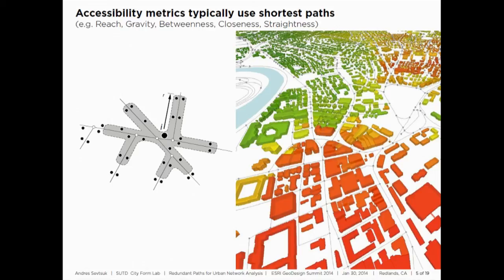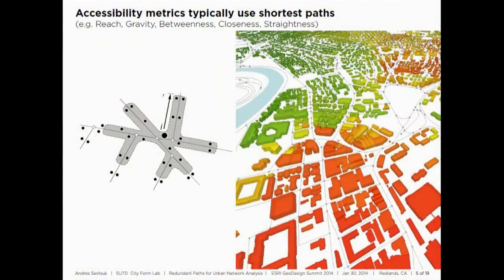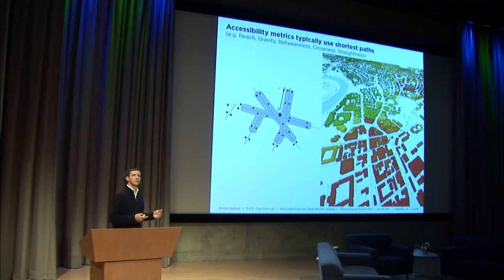Much of the software and many of the tools available for analyzing urban environments along networks actually simplify the picture and assume that travel occurs only along the shortest path — the least cost path, the least time path, or the least distance path. When we calculate accessibilities in urban environments, we look at walks from some origin point to different destinations and typically just follow the shortest path. This is also true for the Urban Network Analysis Toolbox we've been building and distributing as open source.